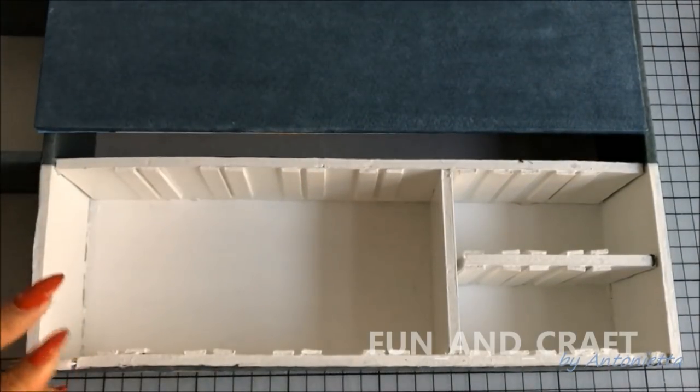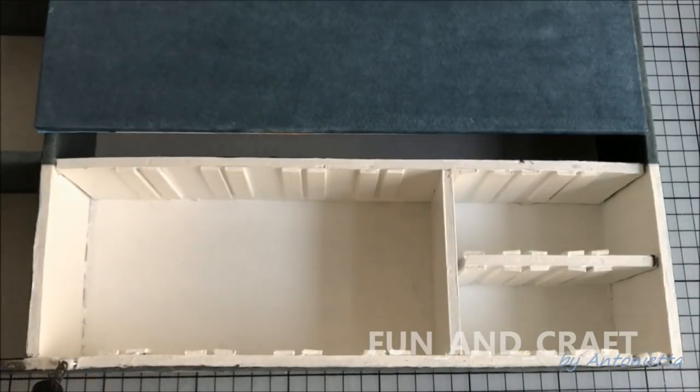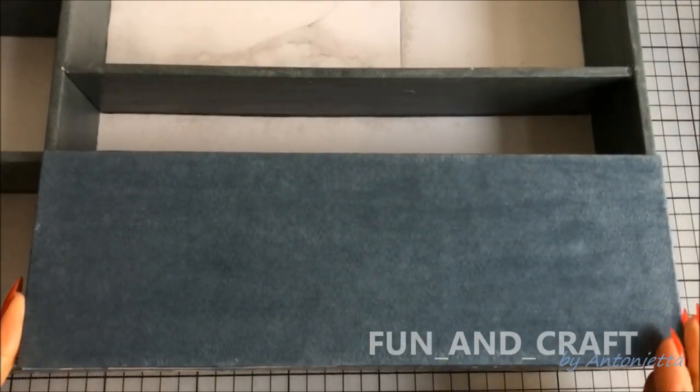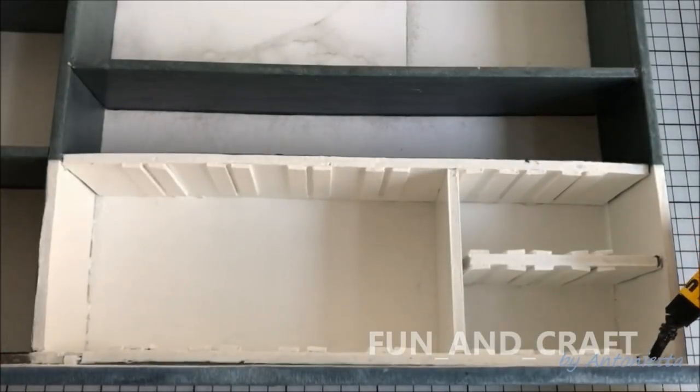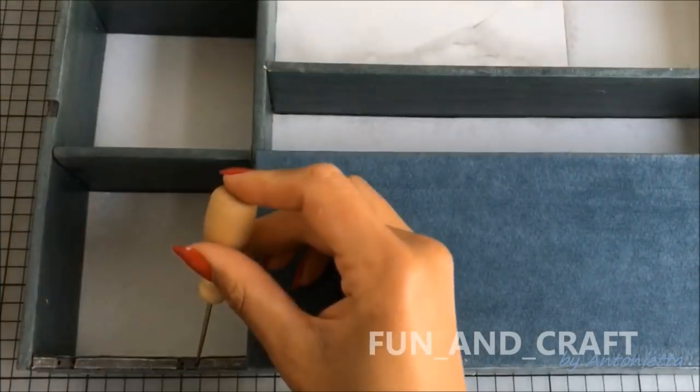Poke two holes in each of the gaps that you prepared earlier and push the hinges through. Apply strong glue on both of them and place the door on top. Wait for it to dry before you open it and apply more glue. Now repeat the steps to attach the rest of the cabinet doors.